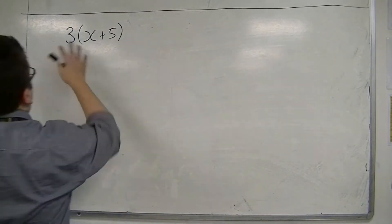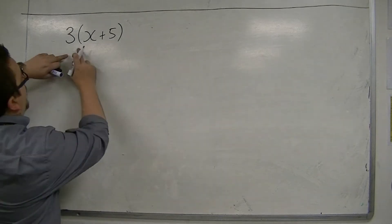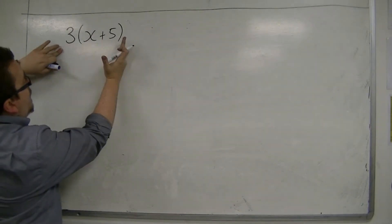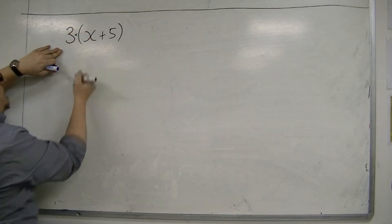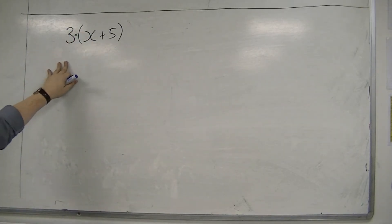Because effectively, what does this mean? It means that I've got 3 lots of x plus 5. So there is a sneaky little times sign in there that we don't bother writing. 3 times whatever's inside the bracket.